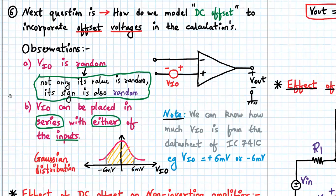Observation number one: VIO is random. Not only its value is random, but its sign is also random. That means VIO can be positive or it can be negative. There is no way to determine that.